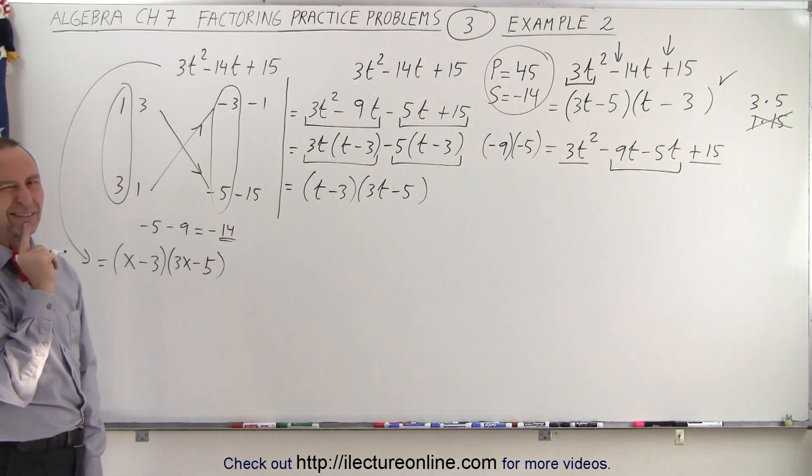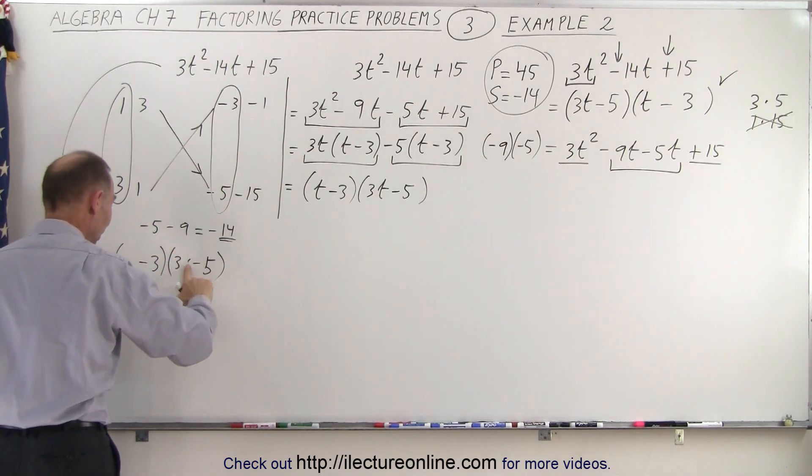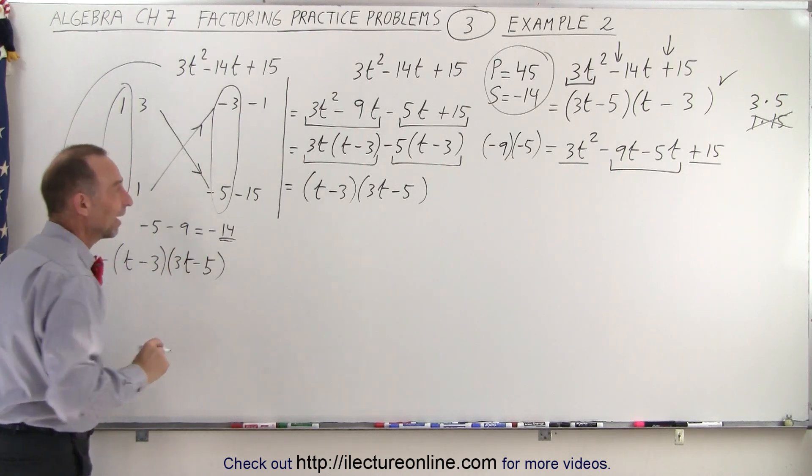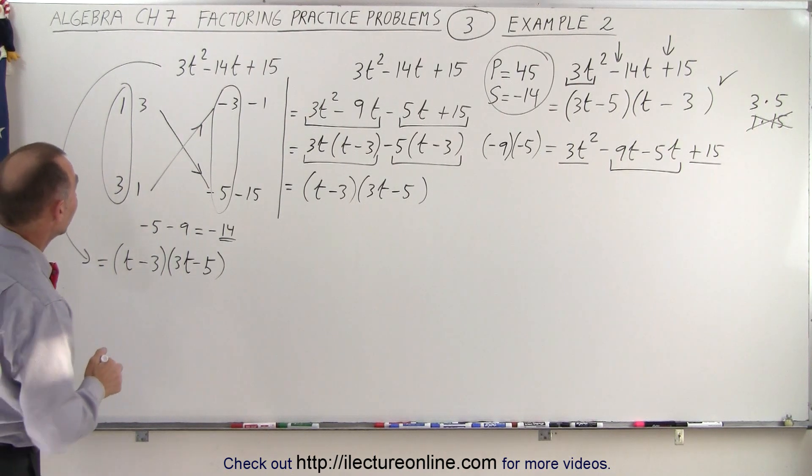And so this is the factored form of our original problem. Now of course I used x's instead of t's. Hmm, I should have written t's instead, not x's. So let me go ahead and change that because in this example we use t's and not x's. But notice that using the full method went pretty quickly.